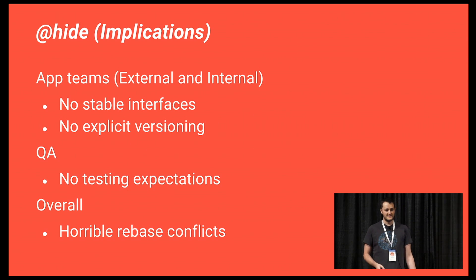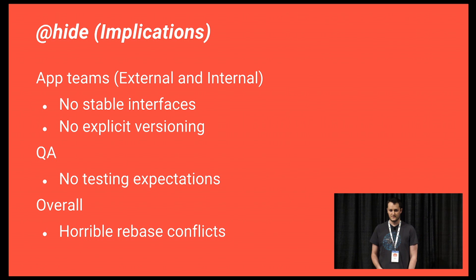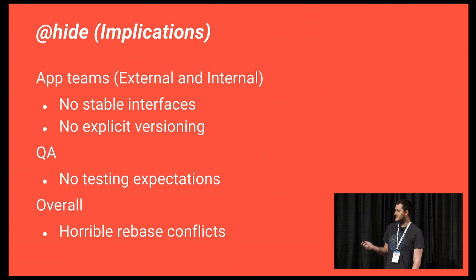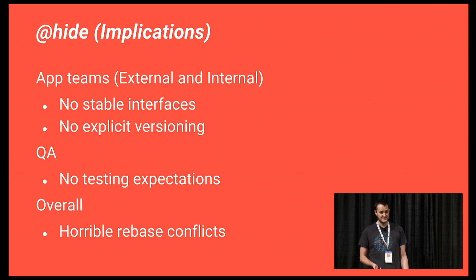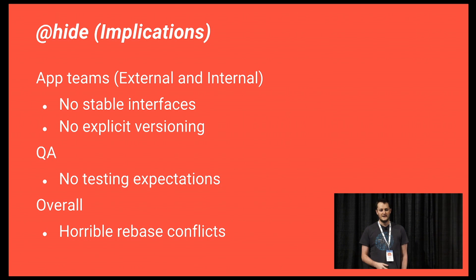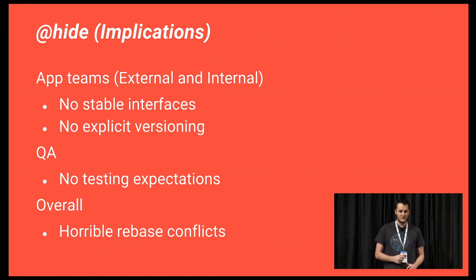What implications did that have for us? Something like Profiles — if we wanted to extend that to applications we were working on with separate teams or someone externally, we couldn't, because there were no stable interfaces. I couldn't tell you to make this API call and expect a certain result back, because we had no explicit versioning. It also made QA a horrible experience — we couldn't set testing expectations based on versioning releases. And then there were horrible rebase conflicts: every time a new Android version came out, we'd have to replay all the commits that created the service. It became way too much.